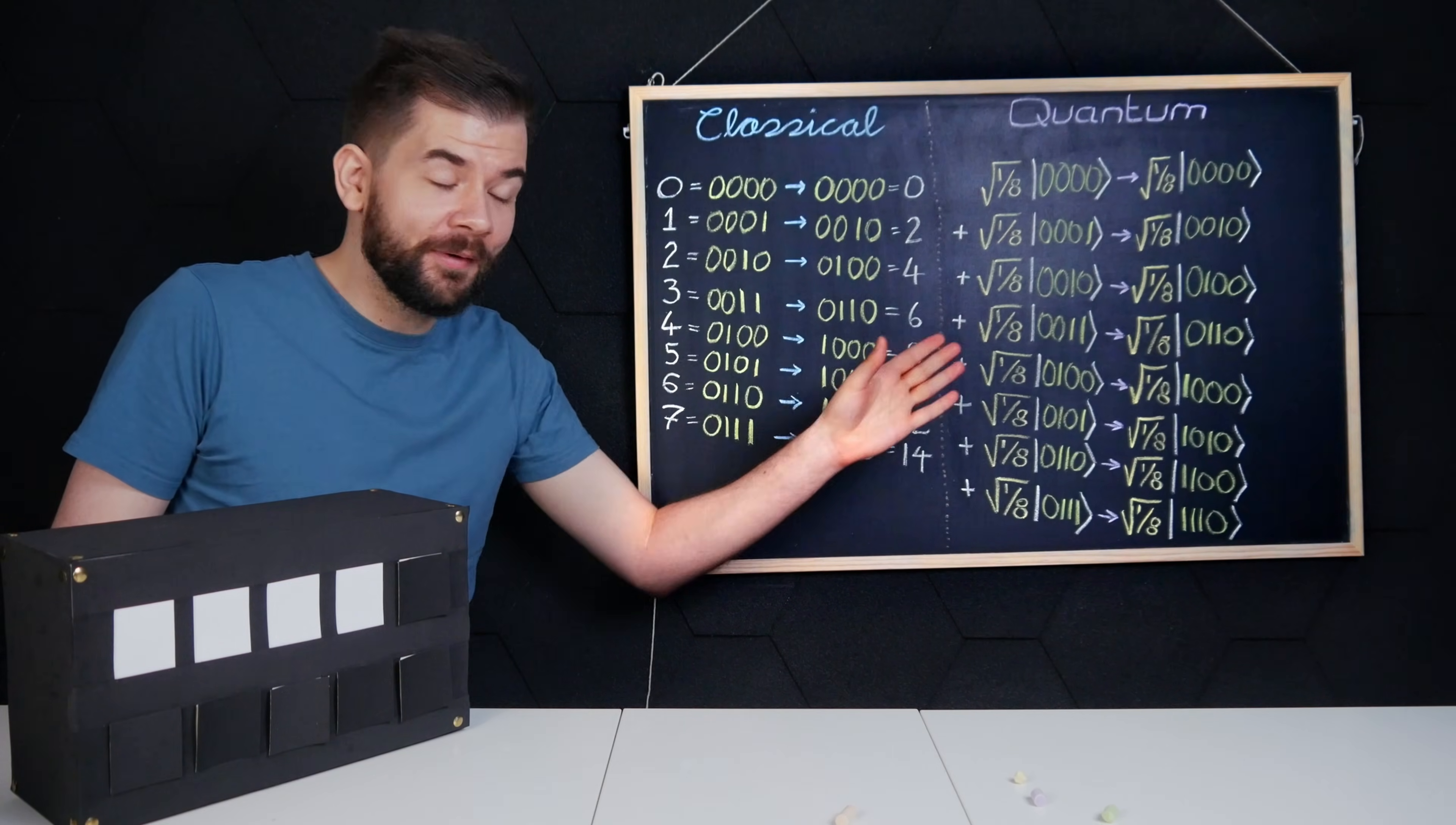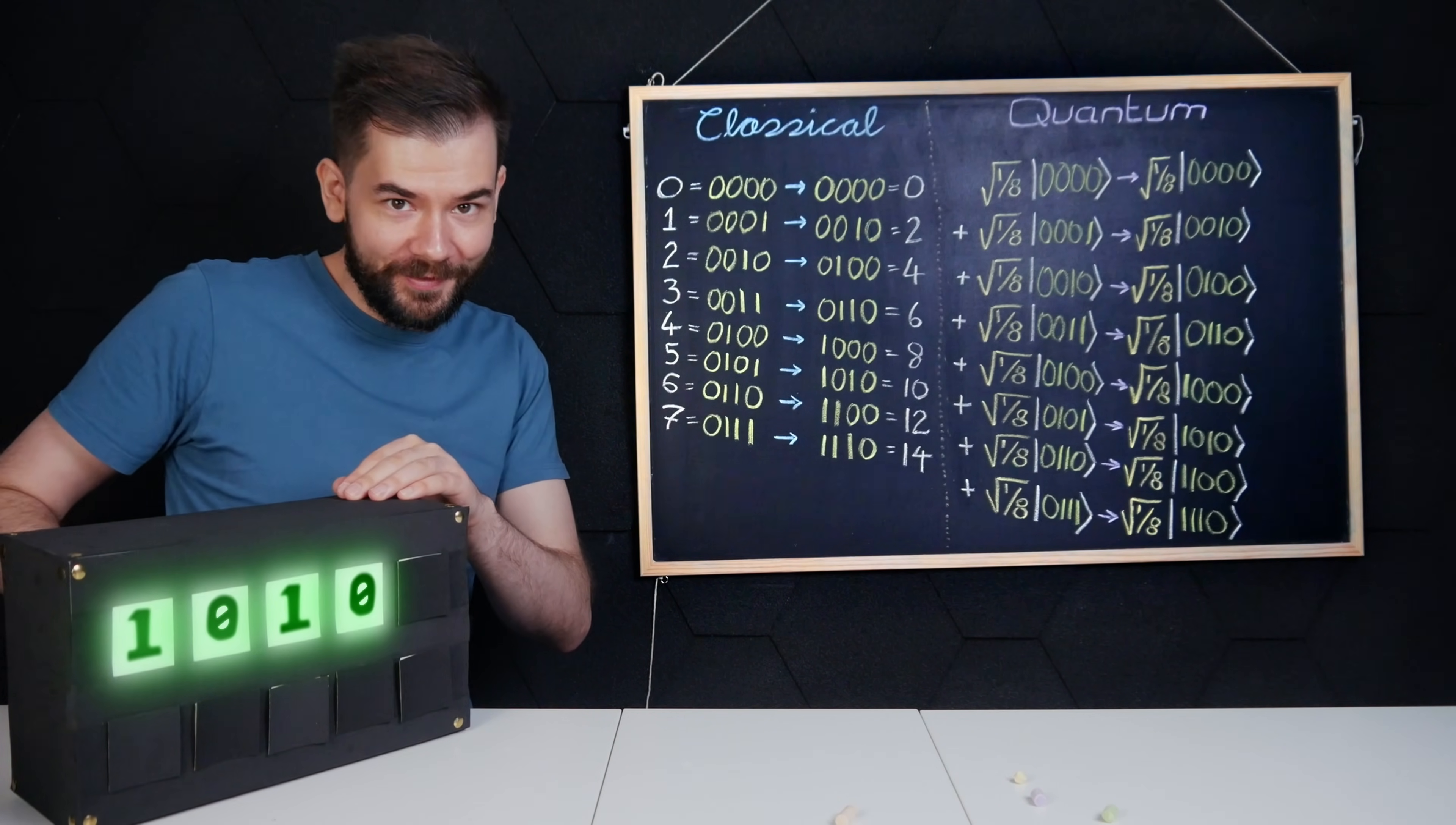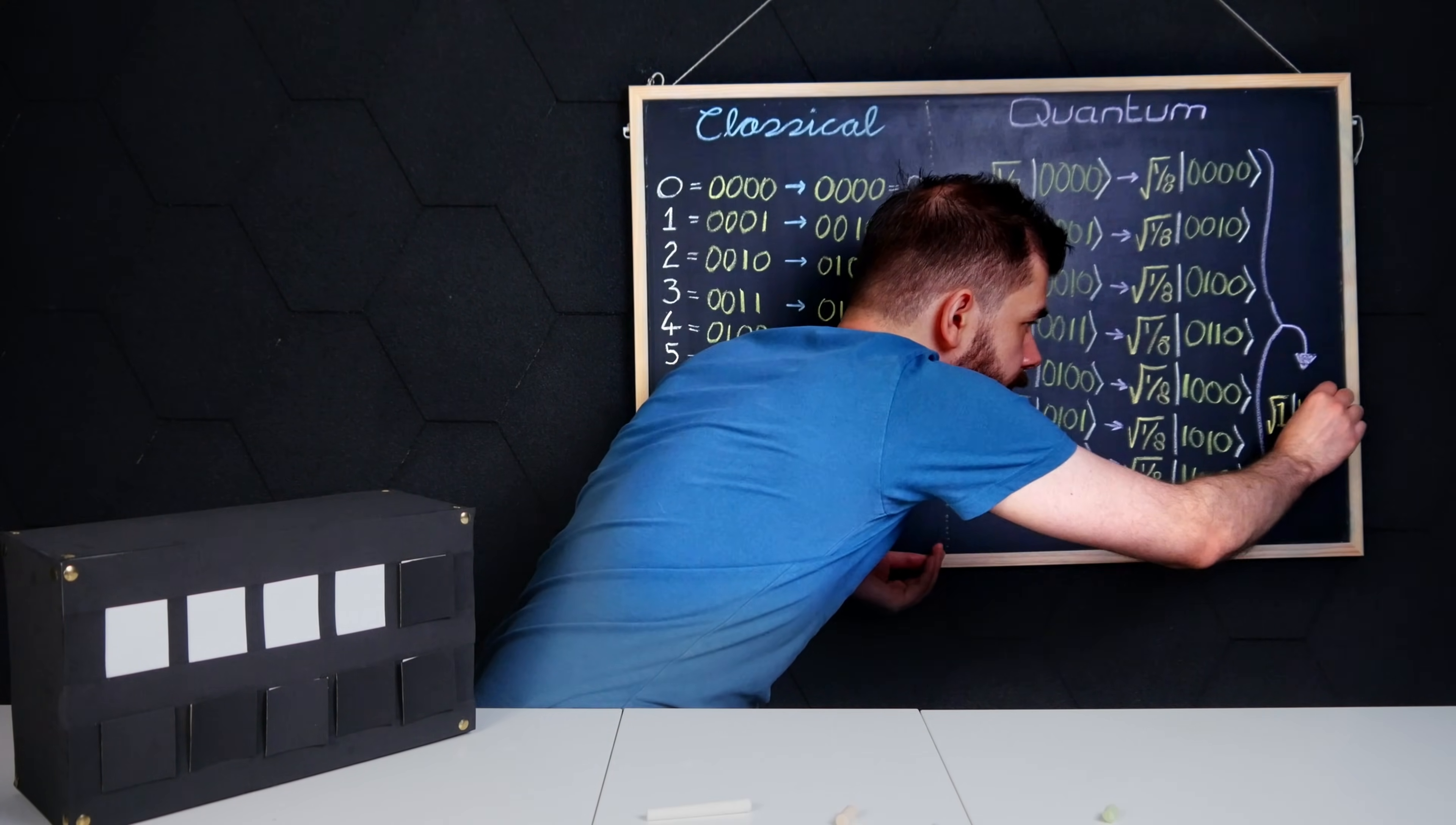However, the qubits are now in a superposition of all of these answers. So if I look through the window of this black box, I will only see one of the answers. And after measurement, the superposition collapses and my qubits are set in that specific state.